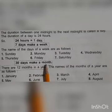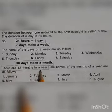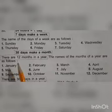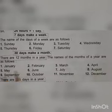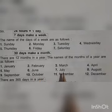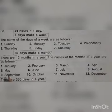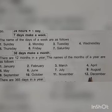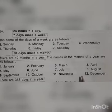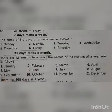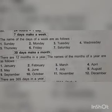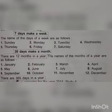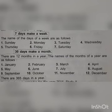There are 12 months in a year. The months are: January, February, March, April, May, June, July, August, September, October, November, and December. These 12 months together make 365 days, so there are 365 days in a year.